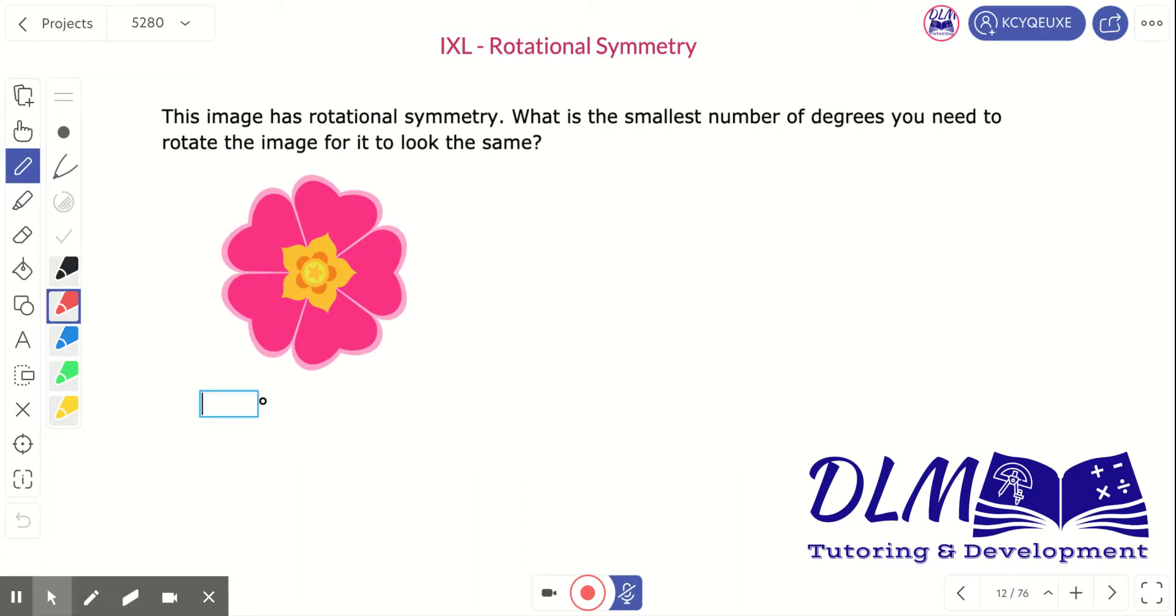This image has rotational symmetry. What is the smallest number of degrees you will need to rotate the image for it to look the same? So, I'm going to count how many sections there are. This makes one, two, three, four, five sections.